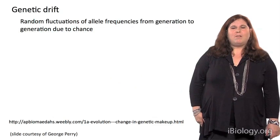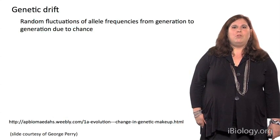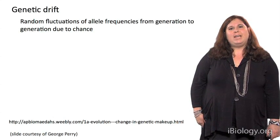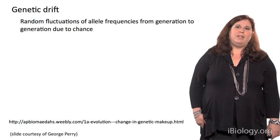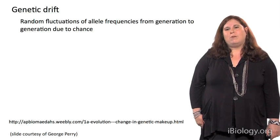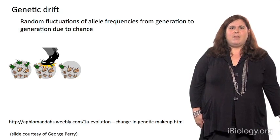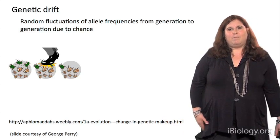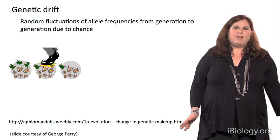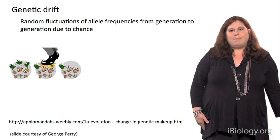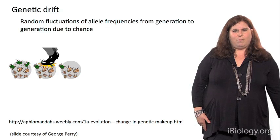Allele frequencies will also change over time due to genetic drift, which is defined as random fluctuations of allele frequencies from generation to generation, simply due to chance. As we see, sometimes things can happen, like these bugs are getting squashed. And that's going to change perhaps the allele frequency in the next generation.